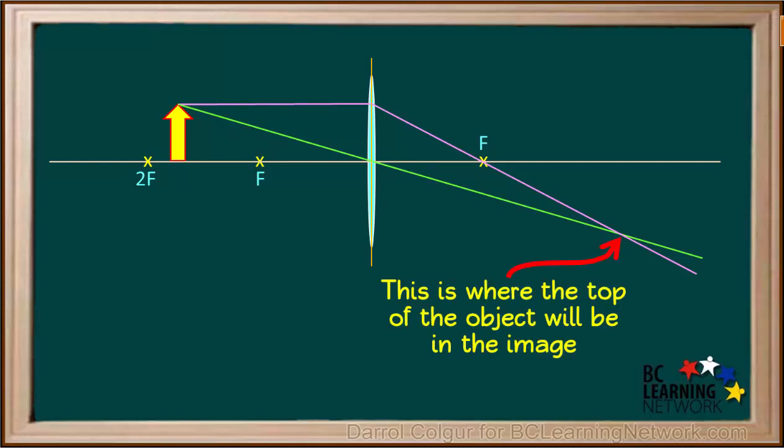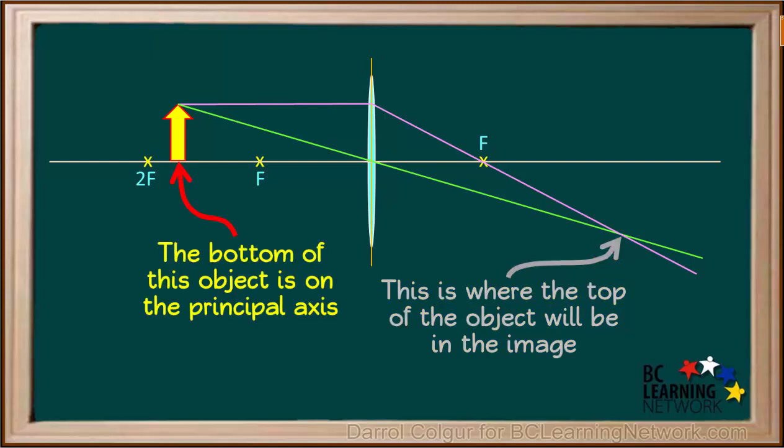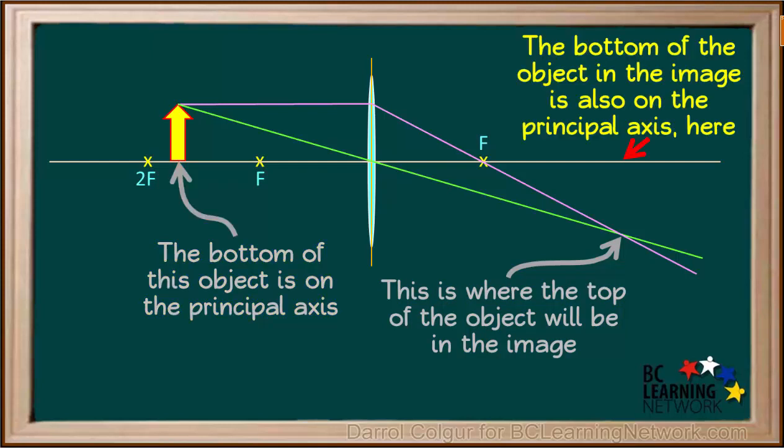The top of our object in the image will be at the point where these two lines cross. Because the bottom of our object is sitting on the principal axis, the bottom of the object in the image will also touch the principal axis.